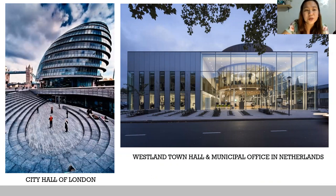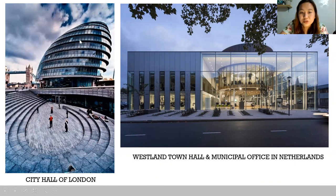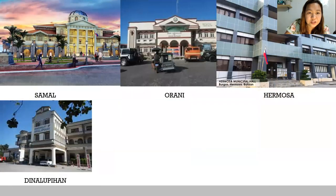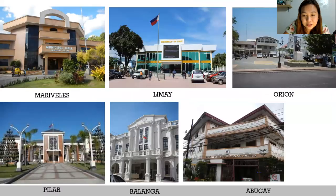Now let's look at the most impressive examples — city halls and municipal halls from other countries. This is the City Hall of London, designed by Norman Foster. These buildings are not repainted or restructured based on each administration. This is the Westland Town Hall and Municipal Office in the Netherlands. I hope you design something that can be modern, or incorporate traditional architecture — like Balanga did.